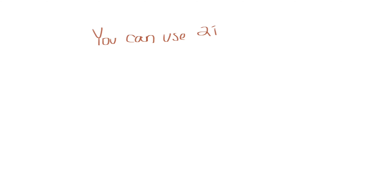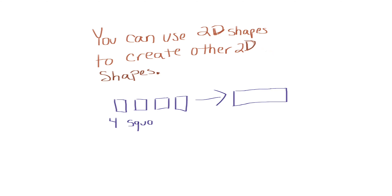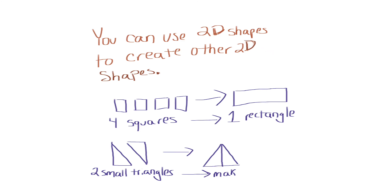Now that we have reviewed our 2D shapes, we can create new shapes with those shapes that we talked about. You can use 2D shapes to create other 2D shapes. For example, we can use 4 squares — if we put them together side by side, we can make one rectangle. Or if we use 2 small triangles and put them next to each other, we can make a big triangle.